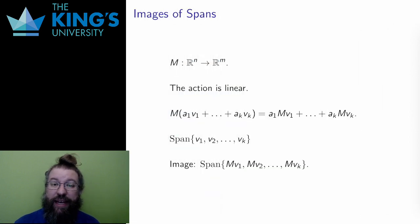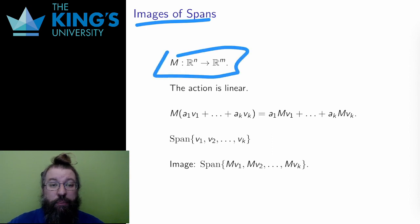I said that matrices act on subspaces. Subspaces are described either as spans or loci. Let me start with spans. Again, I have a transformation M from Rn to Rm. The action is linear. All the functions in this course are linear functions.